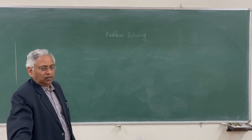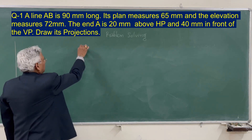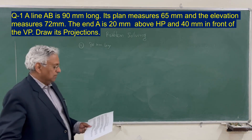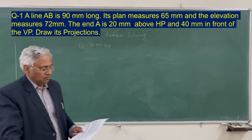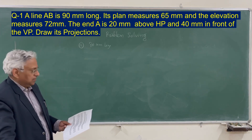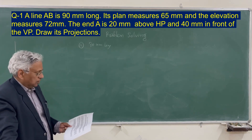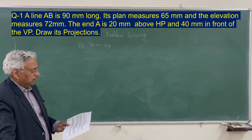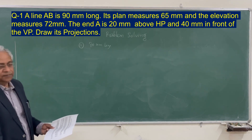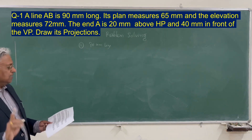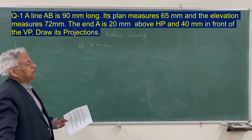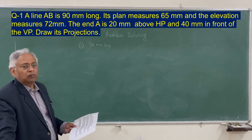The first problem was: a line AB is 90 mm long. Its plan measures 65 mm and the elevation measures 72 mm. The end A is 20 mm above HP and 40 mm in front of the vertical plane. Draw the projection of the line. Now here, the true length of the line is given as 90 mm long, and therefore to solve this problem you should recall the method of finding true length when projections are known.